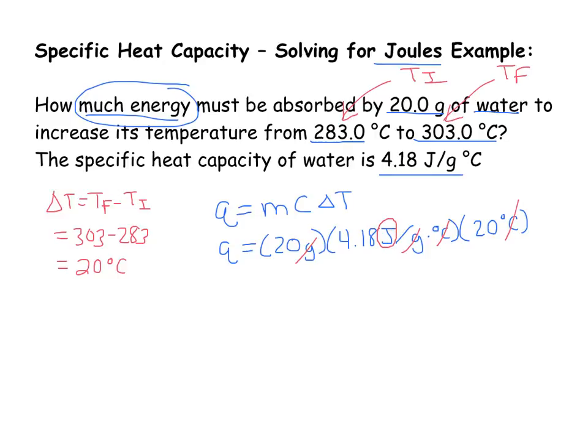So I'm going to take Q is equal to 20 times 4.18 times 20. And my final answer here will be 1,672 joules. And if I was doing it to the correct number of significant figures, which really should be three, this should be 1,670 joules as my final answer using three significant figures.